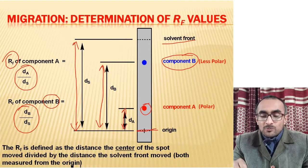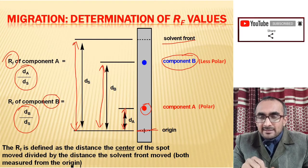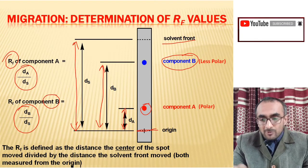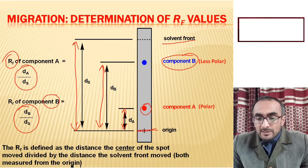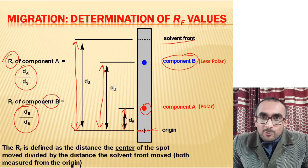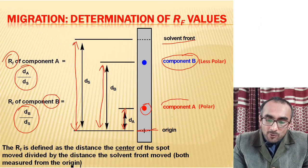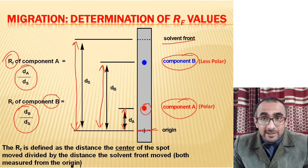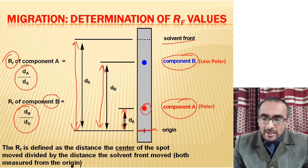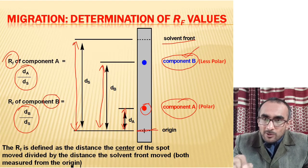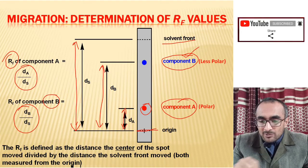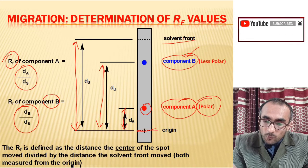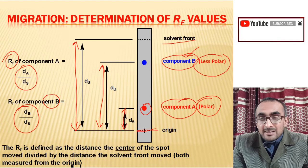Component B, which moved faster, has a higher RF value, whereas compound A has a lower RF value. This is due to the chemical nature of both compounds: compound A is more polar and is retained by the stationary phase, which is also polar in nature — silica gel here. Component B is not retained as well by the stationary phase, so it moves faster. Therefore, component A is polar whereas component B is less polar in nature.